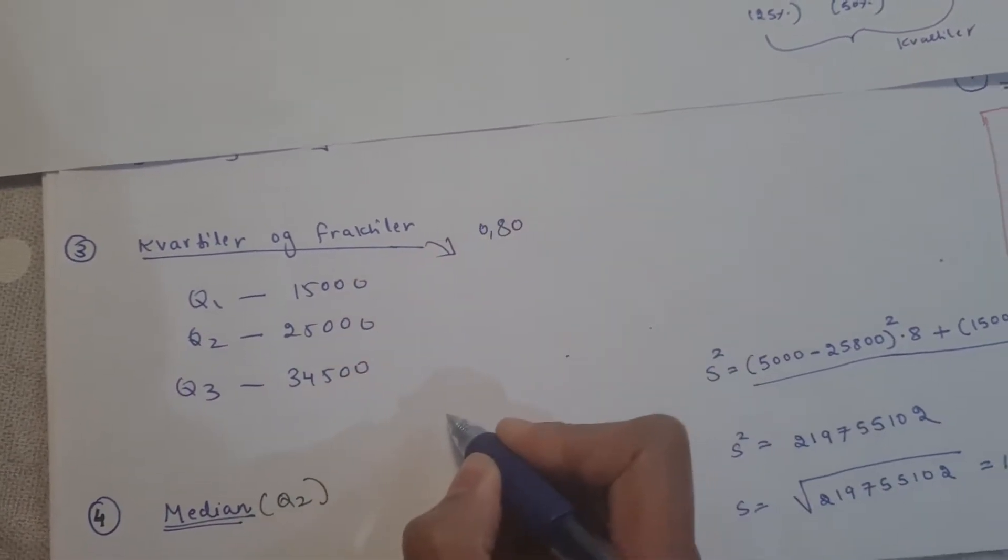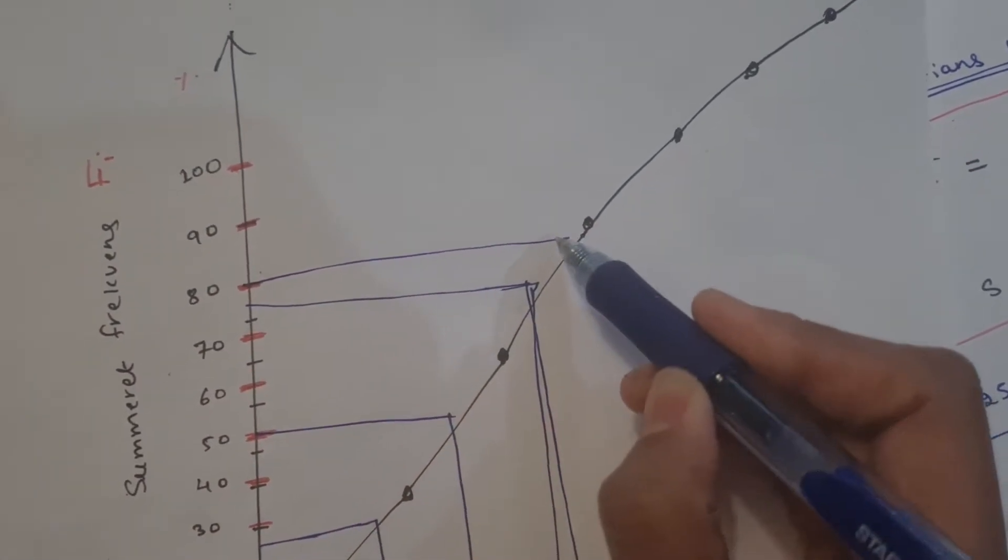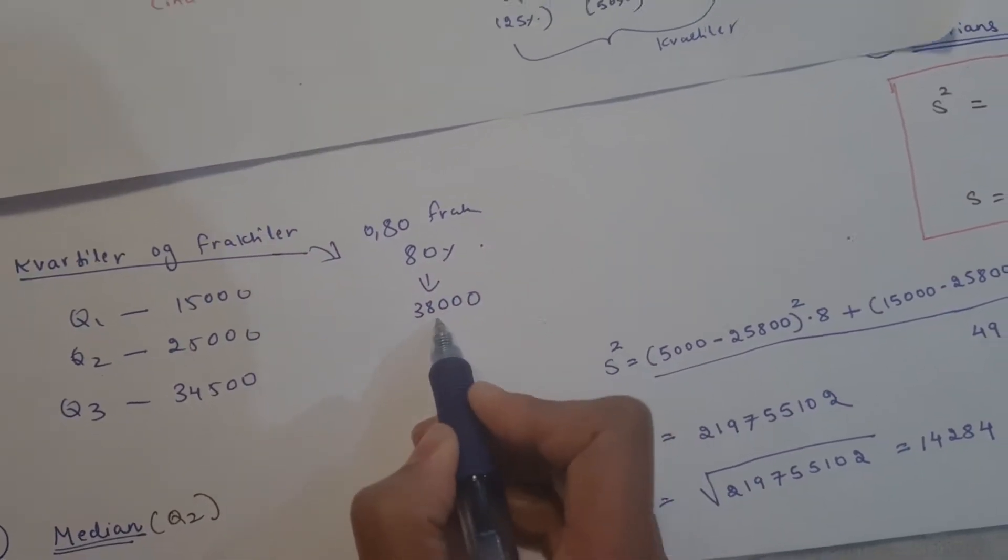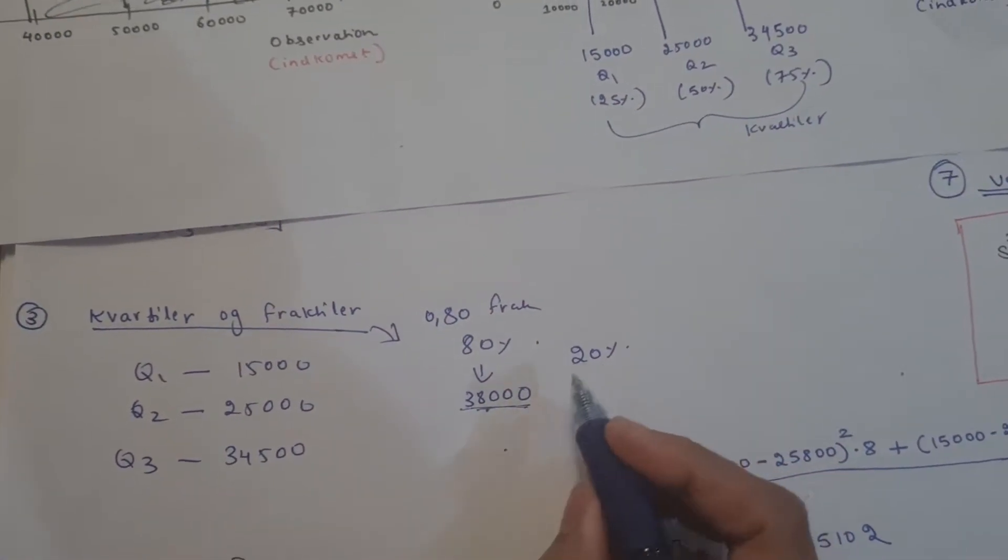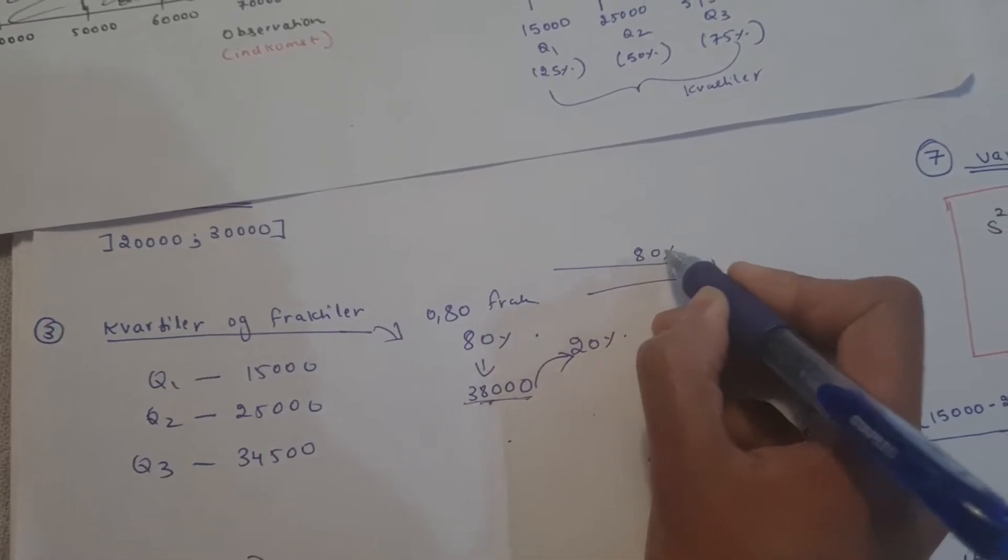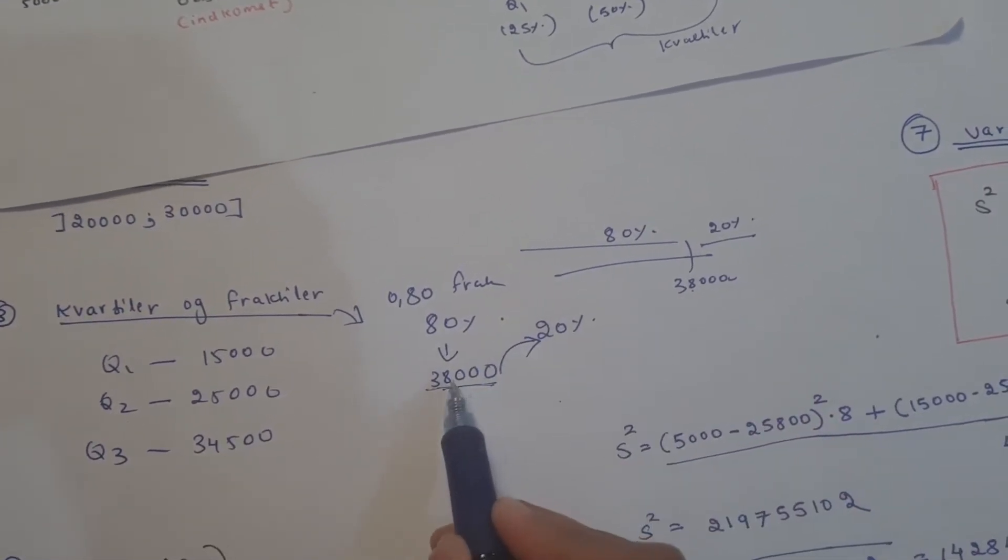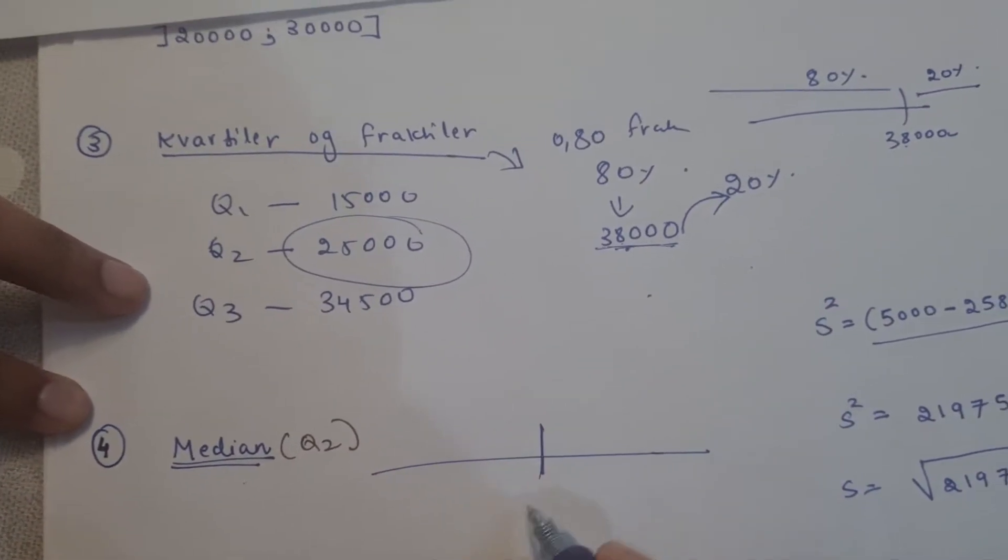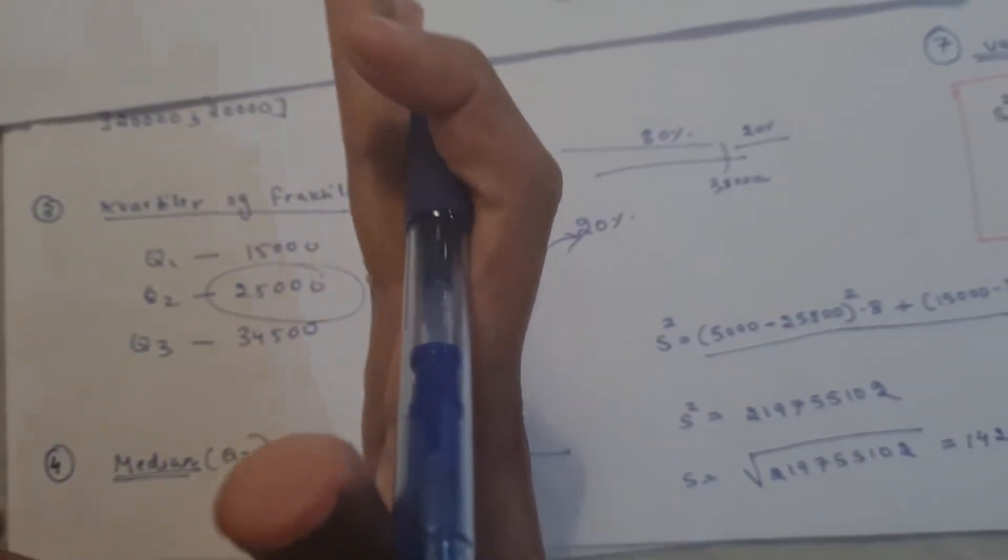We can also find fractiles. For example, the 0.8 fractile, or 80% fractile, is 34,750. This means 80% of people have income of 34,750 or less. That means only 20% of the sample have more income than 34,750. So you can see that 34,750 is here, so 80% of people are below this, and only 20% remain who have more than this.